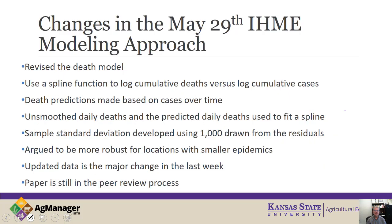This is an update of the June 2nd model. The major change here is just updated data — essentially another week of information has been provided into the model. There really hasn't been a major change in the model itself. The paper is still in peer review process. As we learned this week, unfortunately, articles that are peer reviewed are sometimes withdrawn, as occurred in Lancet and the New England Journal of Medicine. Peer review does mean something, but sometimes things get published and need to be withdrawn based on findings a little later.